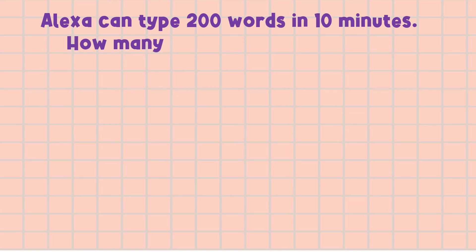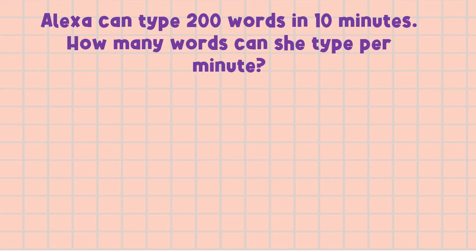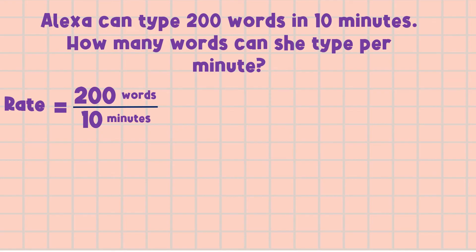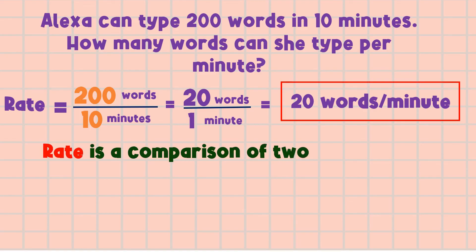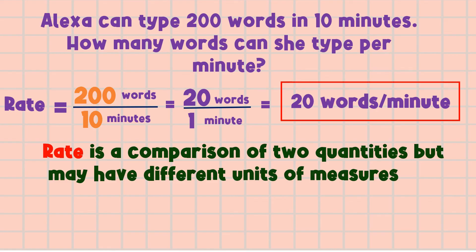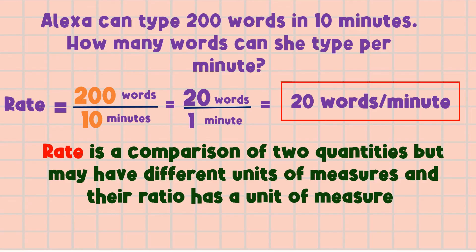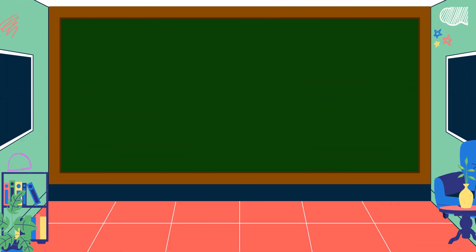Another example: Alexa can type 200 words in 10 minutes. How many words can she type per minute? To solve this, we find the rate. 200 words is to 10 minutes. To find the number of words per minute, we divide 200 by 10. 200 divided by 10 equals 20 words per minute. In this example, we can't convert words to minutes, so this is a rate. What is a rate? Rate is a comparison of two quantities that may have different units of measure, and their ratio has a unit of measure.